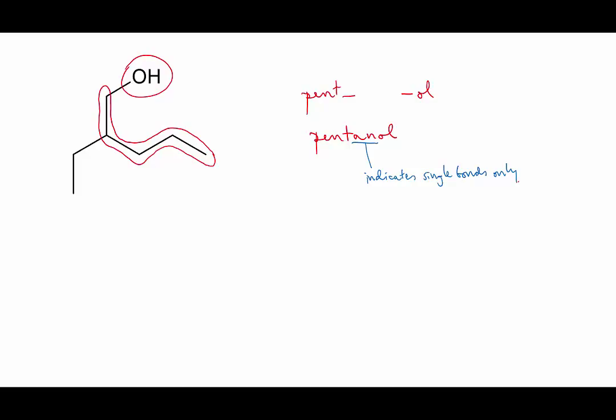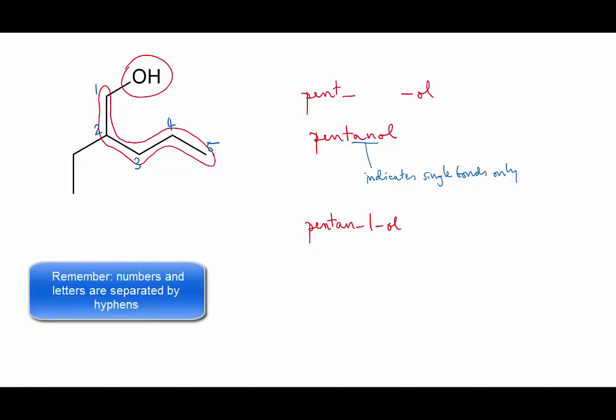Okay, but we're not finished yet. We need to indicate where the alcohol group is, and we also need to add the substituent. So we number the chain in such a way as to give the functional group the lowest possible number. In this case it's easy, so we have to number the chain so that the OH group is attached to carbon number one. So that makes it pentan-1-ol. Notice that we separate the numbers and letters by hyphens when writing a name.